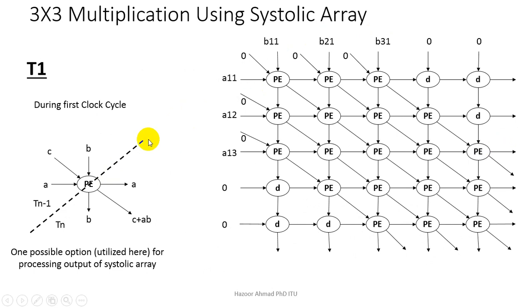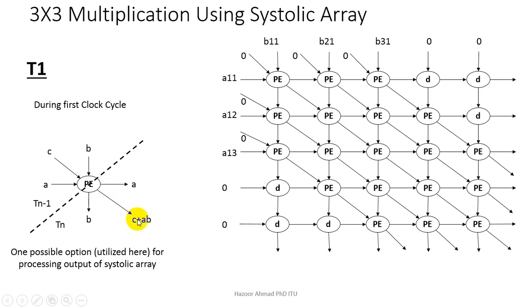Let us start from the first clock cycle. At time t minus 1 we will have three inputs: A, B, and C. After the clock cycle ends, on the next clock cycle, B will be moved downward, A will be moved rightward, and C will be moved to the diagonal side but will be added to the multiplication of A and B. The rule is: move A to the right side, B to the down side, and add C with A multiplied by B.